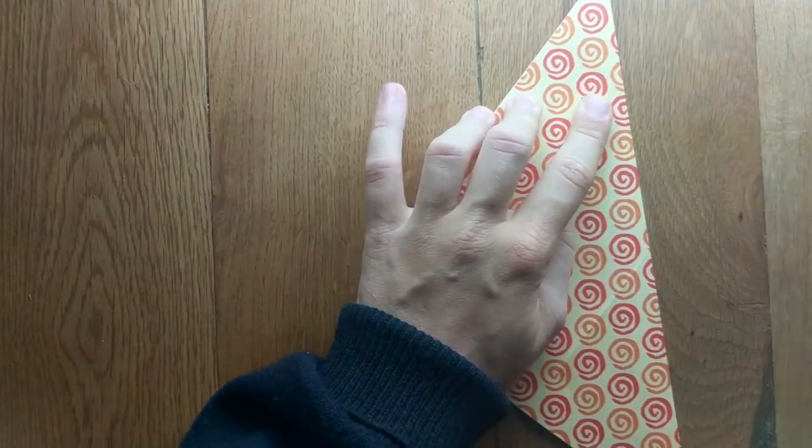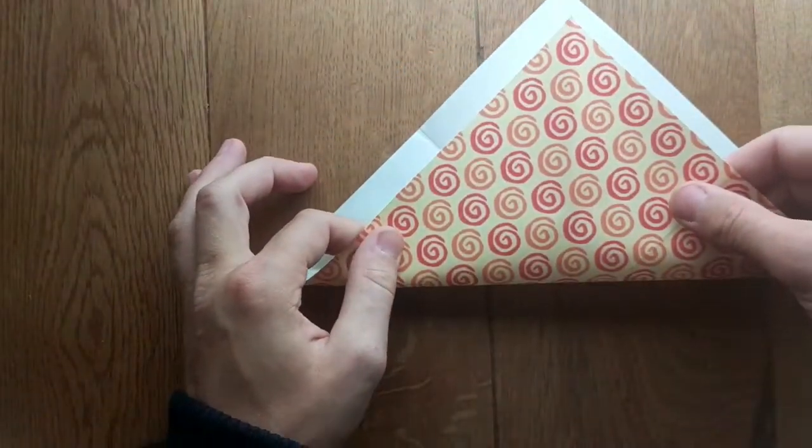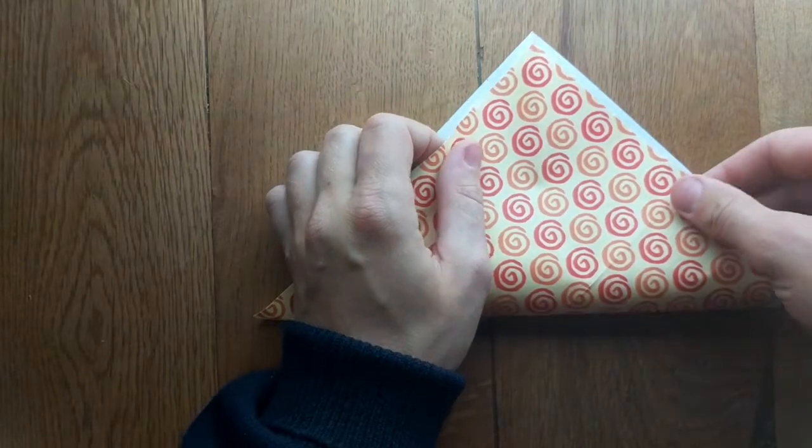Make sure it's a good crease there, then unfold it and do the same on the other side, so the other two corners this time.